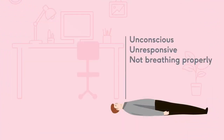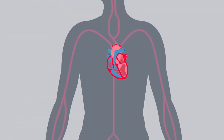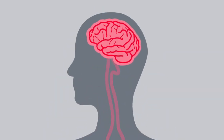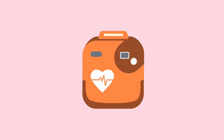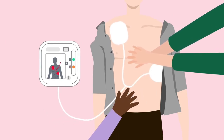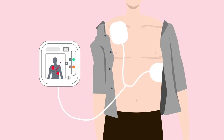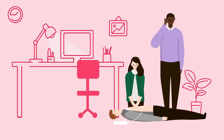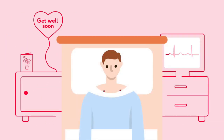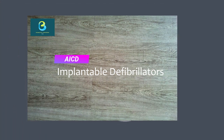AEDs can be fully automatic or semi-automatic. A semi-automatic AED automatically diagnoses heart rhythms and determines if a shock is necessary; if a shock is advised, the user must push a button to administer the shock. A fully automated AED automatically diagnoses the heart rhythm and advises the user to stand back while the shock is automatically given. Some types of AEDs come with advanced features such as a manual override or an ECG display.